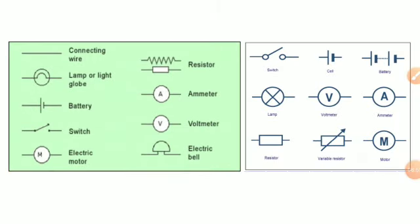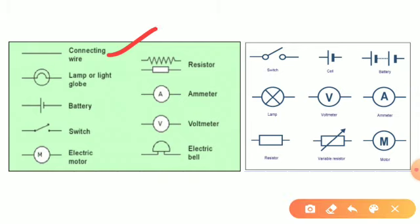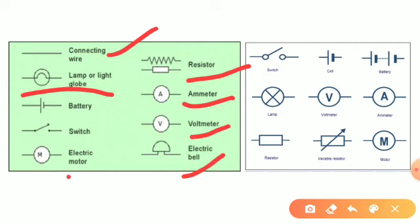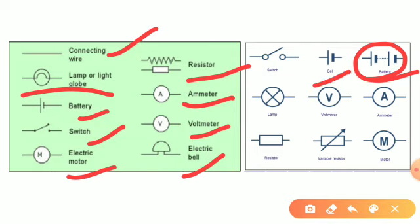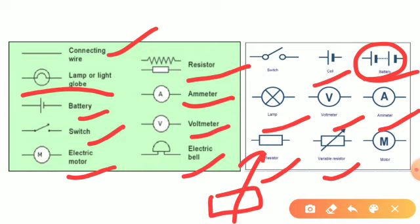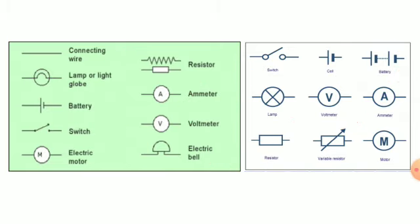Additional symbols: connecting wire is shown as a line; lamp or light globe is shown similarly to a bulb; resistor is shown in two possible ways; ammeter as A, voltmeter as V; electric bell and electric motor also have their own symbols. A switch symbol shows open or closed state. Battery is shown as a combination of two or more cells. Variable resistor always has an arrow symbol. This is the motor symbol. We will continue in the next part.